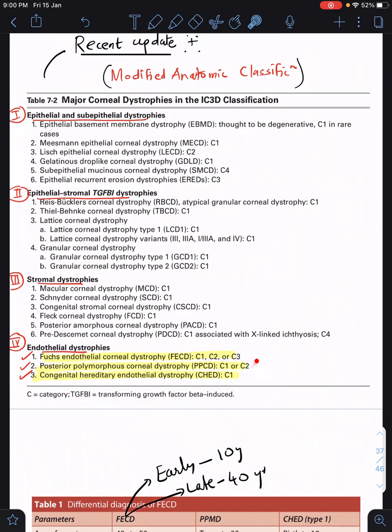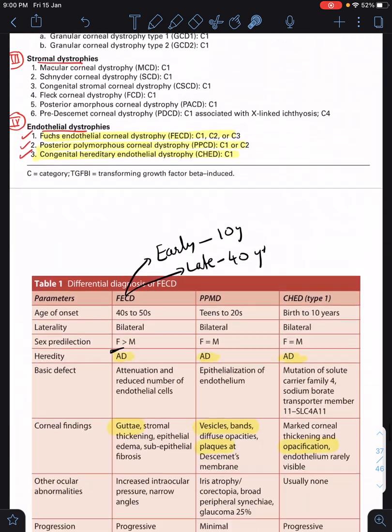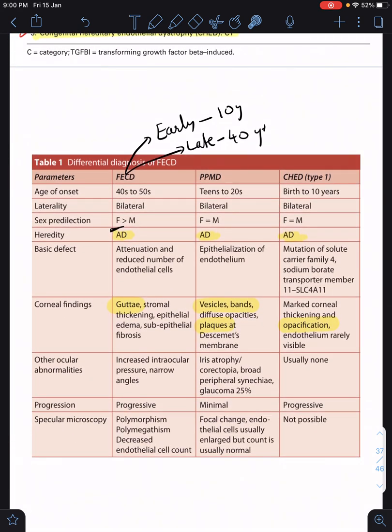Our concern is going to be the three endothelial dystrophies: Fuchs, posterior polymorphous corneal dystrophy (PPCD or PPMD), and congenital hereditary endothelial dystrophy. Differentiating these three - again very important table, pause the video and take a screenshot. Fuchs can present in both early and late, early is at 10 years, late is at 40 years. Except for Fuchs, the other two are going to happen at young age. All three are bilateral, all three are autosomal dominant.